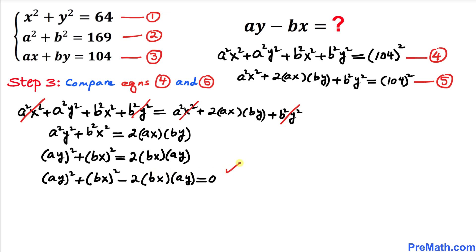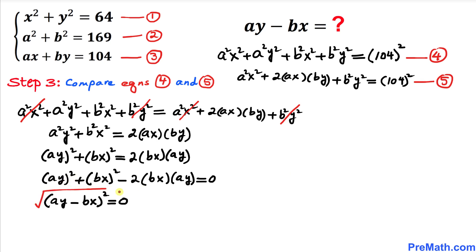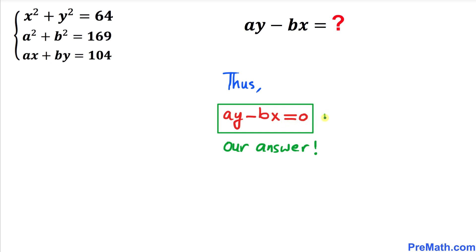The left-hand side of this equation represents a perfect square. Using the identity (a − b)² = a² − 2ab + b², we get (ay − bx)² = 0. Taking the square root of both sides, the square and square root undo each other, giving ay − bx = 0. So our final answer is ay − bx = 0.